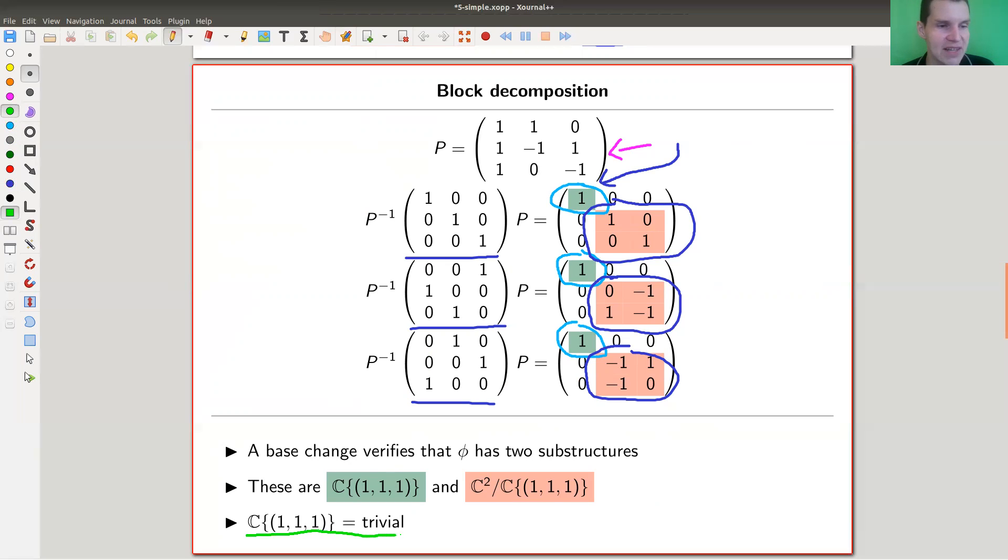So this representation splits into two blocks, or at least into two blocks. So this can't be simple. The simpler representation should be the minimal blocks in a representation. So base change basically verifies that this thing has at least two substructures, the one given by the eigenvector and its complement basically. And this, by construction, is what is called the trivial representation. Why is it a trivial representation? Because everything acts as one. As you can see, this eigenvector is an eigenvector of eigenvalue one for all of these matrices. So everything acts as one, that's what people call the trivial representation.